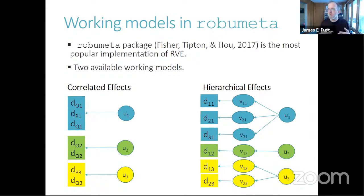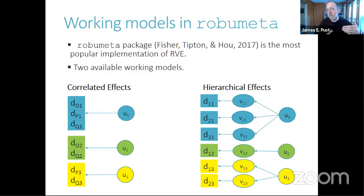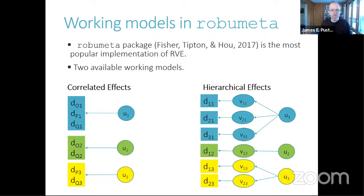The other working model in RobuMeta is the hierarchical effects model, which is more flexible in that it allows for heterogeneity within a given study at the effect size level. Its main drawback is that it assumes no correlation between the effect size estimates themselves. This model is appropriate if each study reports multiple samples but there's only one effect size per sample. In practice, you often have data with both structures, and if limited to RobuMeta, you face a fixed choice between alternatives, neither of which is optimal for describing your database.